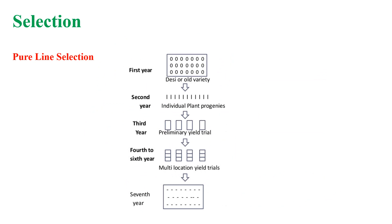Next is pure line selection. During the first year, a large number of plants are selected for superior phenotype. In the second year, individual plant progenies are allowed to grow and undesirable progenies are rejected. Preliminary yield trial begins at the third year, where selected progenies are planted and inferior ones are rejected.